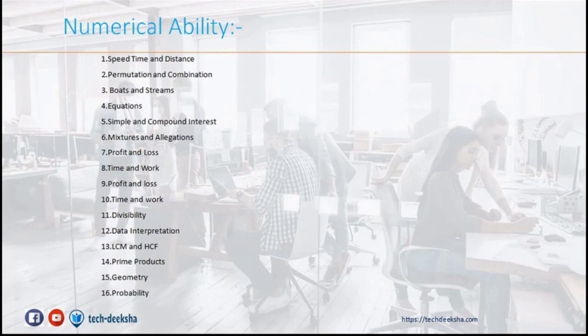In numerical ability, you can expect questions from speed time and distance, permutations and combinations, boats and streams, equations, simple and compound interest, mixtures and allegations, profit and loss, time and work, divisibility, data interpretation, LCM and HCF, prime product, geometry, and probability. In this section, TCS hasn't changed much and they are almost the same as previous years.